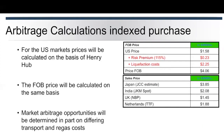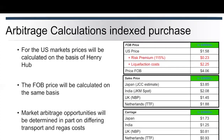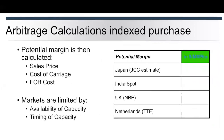We then have to look at what our potential sales prices are. I've got a JCC estimate — the oil index estimate — of about $3.85 in Japan. India, predominantly priced on JKM, has a spot price of around $2.08. UK national balancing point is $1.45, and the Netherlands at $1.88. Taking the carriage costs between the US and the different areas, we can work out our potential margin, based on the sales price, the cost of carriage, and the free-on-board cost.